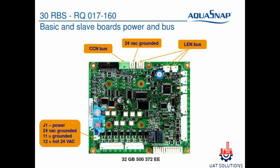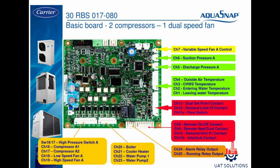On the NRCP2 board, the CCN bus on channel J12, 24-volt AC power connection, and LEN bus connection locations are marked in orange. Variable speed fan control for circuit A is connected on channel 7. Circuit A suction pressure sensor is connected on channel 6, and circuit A discharge pressure sensor is connected on channel 5.